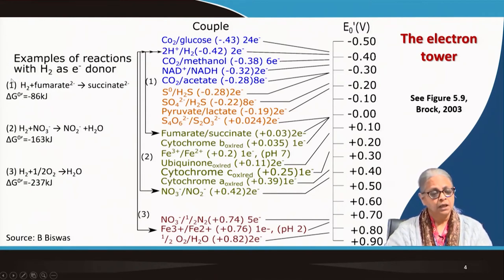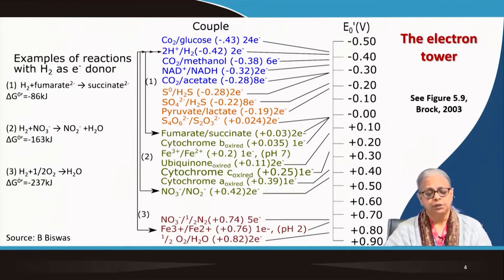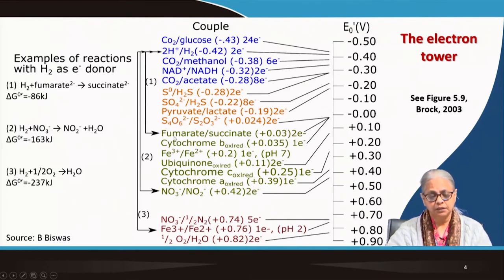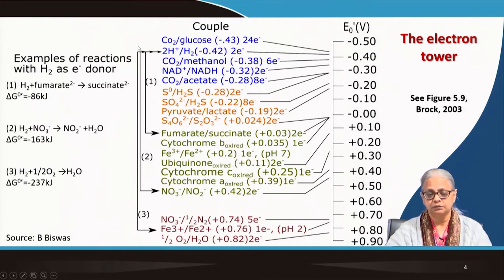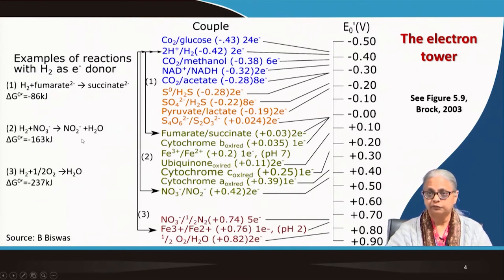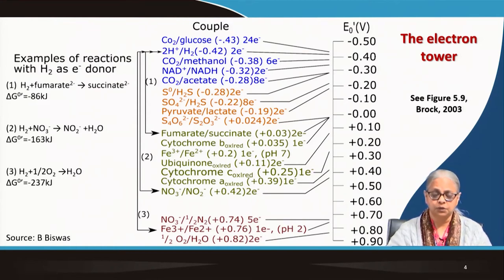Let us take example number one. Here we have hydrogen as the electron donor combined with fumarate going to succinate — it is not a big fall along the electron tower. The delta G value for this reaction is minus 86 kilojoules. Then hydrogen combined with nitrate gives a slightly larger fall, with delta G⁰' of minus 163 kilojoules. Finally, hydrogen combined with oxygen going to water goes all the way down and releases minus 237 kilojoules.